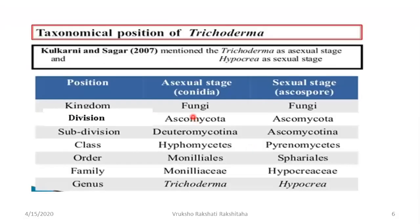Pigeon pea is our red gram. Now let us look into the taxonomical position of Trichoderma. When the fungal life cycle was being studied, some fungi only had an asexual phase discovered, and it was not sure whether the sexual phase was present. Such fungi were included in Deuteromycotina. The same is the story with Trichoderma — an asexual stage was studied first and later the sexual stage was discovered. So it has two ways of classification and two names. The sexual stage is classified under: Kingdom Fungi, Division Ascomycota, Subdivision Deuteromycotina, Class Hypomycetes, Order Moniliales, Family Moniliaceae, Genus Trichoderma.